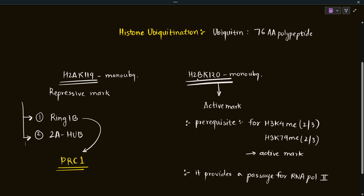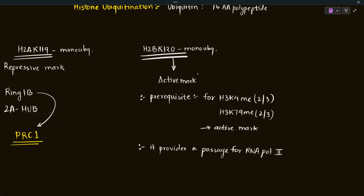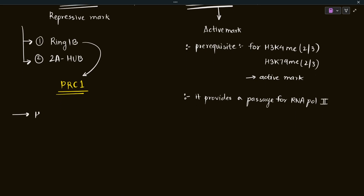While ubiquitination is generally associated with protein degradation and tagging damaged proteins, in histones it is very important and exhibits a different kind of epigenetic role. Being a prerequisite for active marks is a very distinct characteristic of ubiquitination not normally known to researchers at first. H2A K119 mono-ubiquitination is done by Ring1b, which is part of the PRC1 complex.